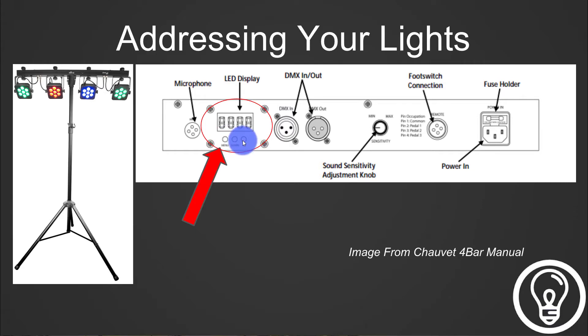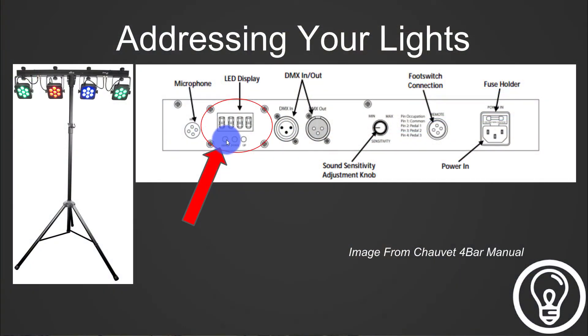This particular fixture, the Chave 4 bar, only has menu, up, and down — at least the old ones only had that. A lot of fixtures have an enter but regardless, in these typical setups you basically say, what's my DMX address need to be? Maybe it needs to be 15. So I'll go through the menu until I see 'address' or something like that. You're going to want to consult your fixture's manual and it's going to tell you what to look for in that menu to get to the address function.